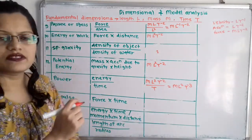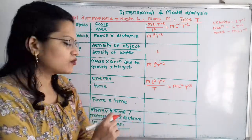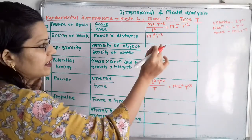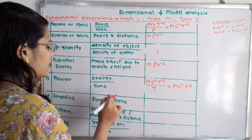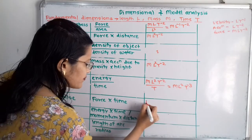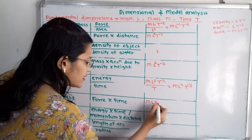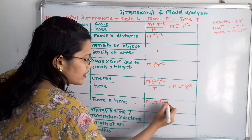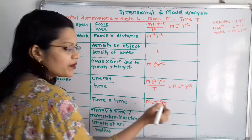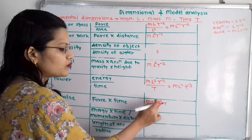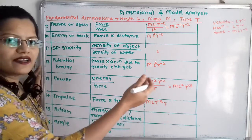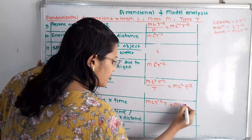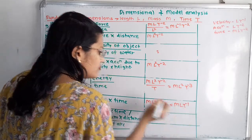Then impulse. Impulse is force into time. For force we write MLT raised to minus 2, multiplied by time T. So T raised to minus 2 plus 1 equals T raised to minus 1, and the dimension is MLT raised to minus 1.